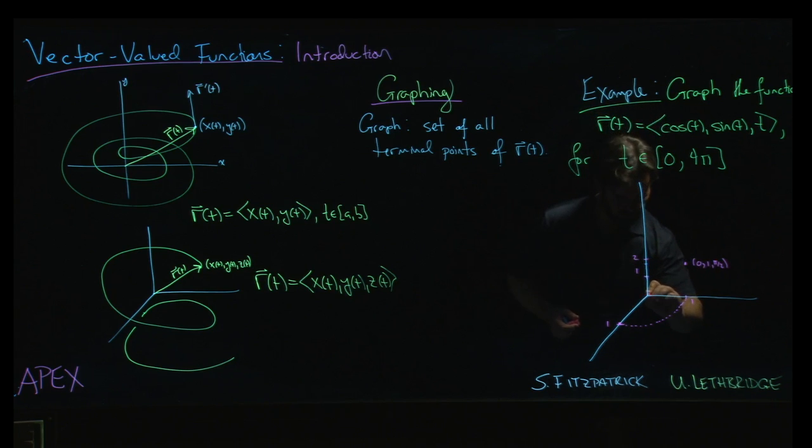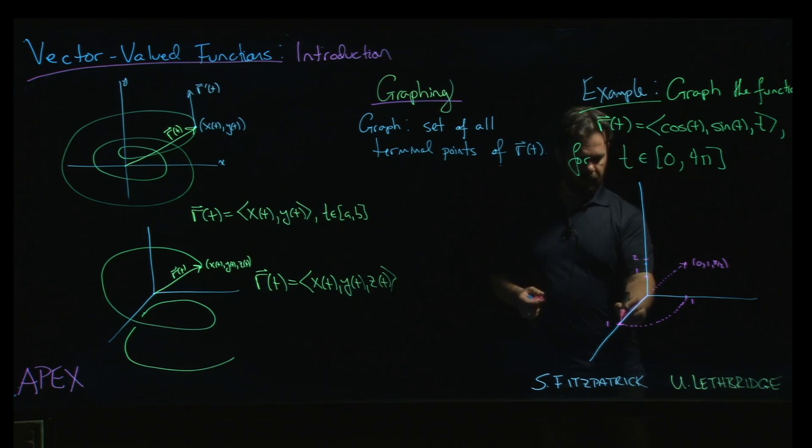And if we wanted, we could draw the vector corresponding to that point, right? We start with this vector here. And so what's going to happen as t goes from, say, zero to pi over two is that vector is going to swing around and up until it gets there.